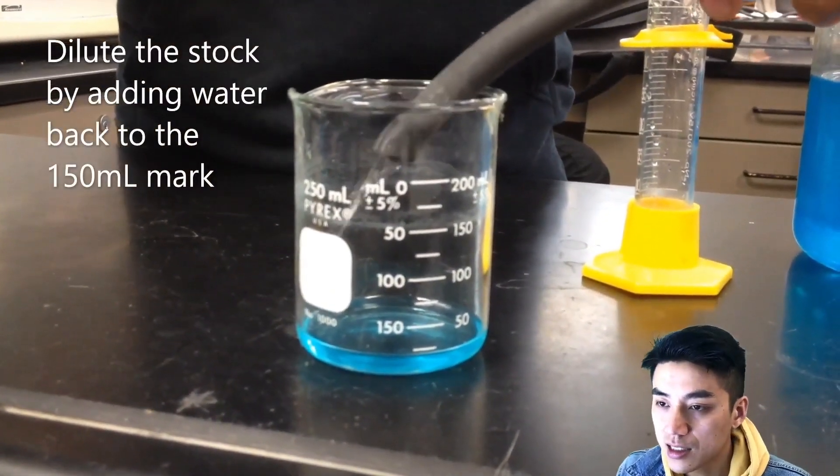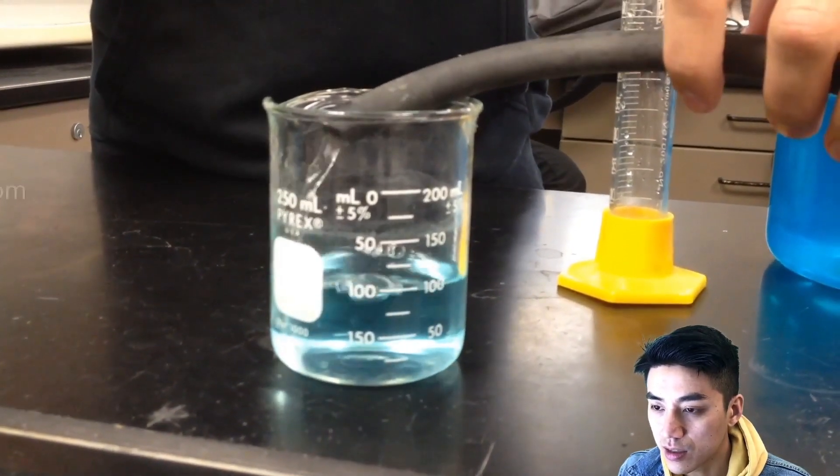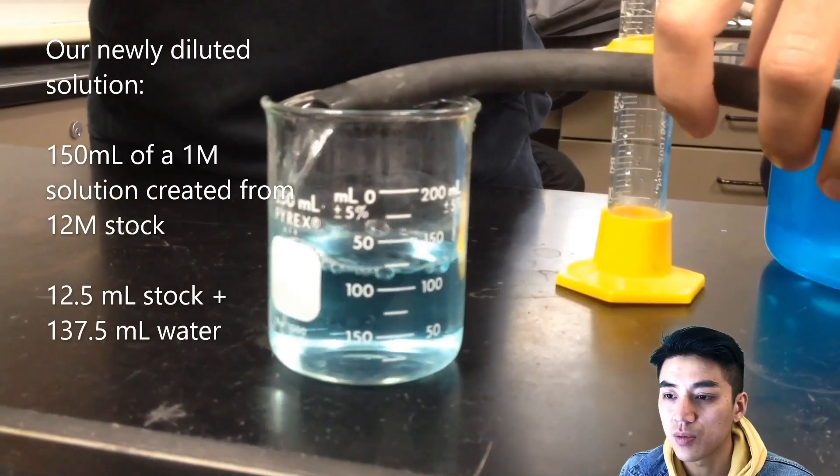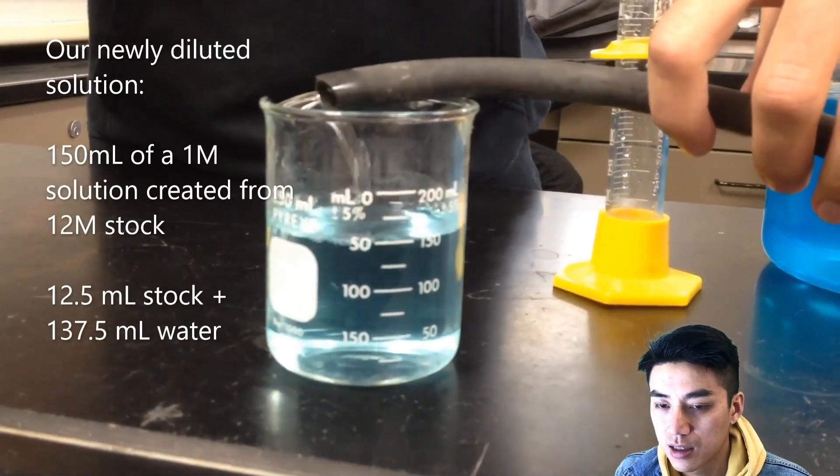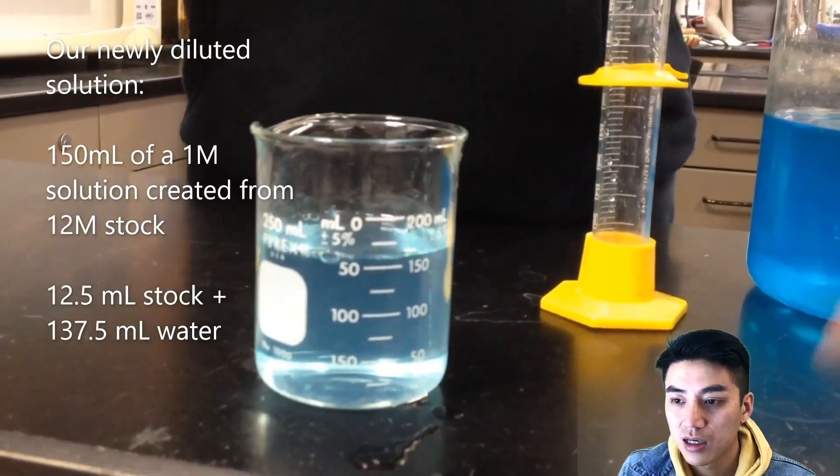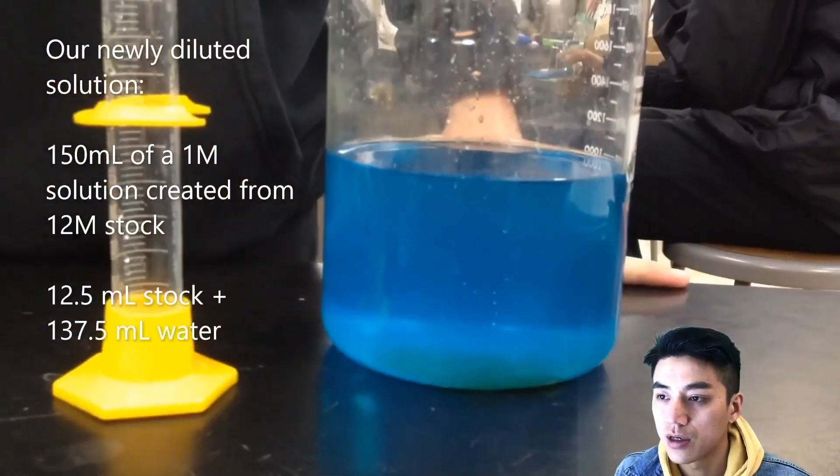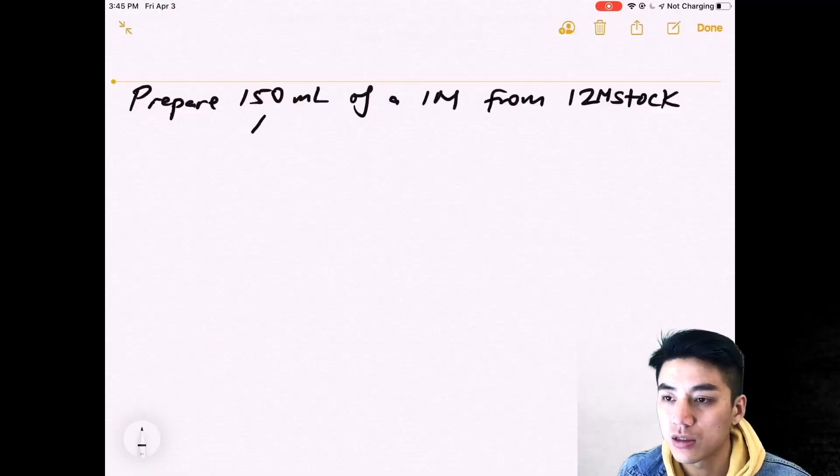And the rest is just going to be water. So the water, you just fill it until it reaches the 150 milliliter mark. Okay, so it turns out we're using 12 and a half milliliters of stock and 137.5 is water. So when you add the two together, you get 150 milliliters.